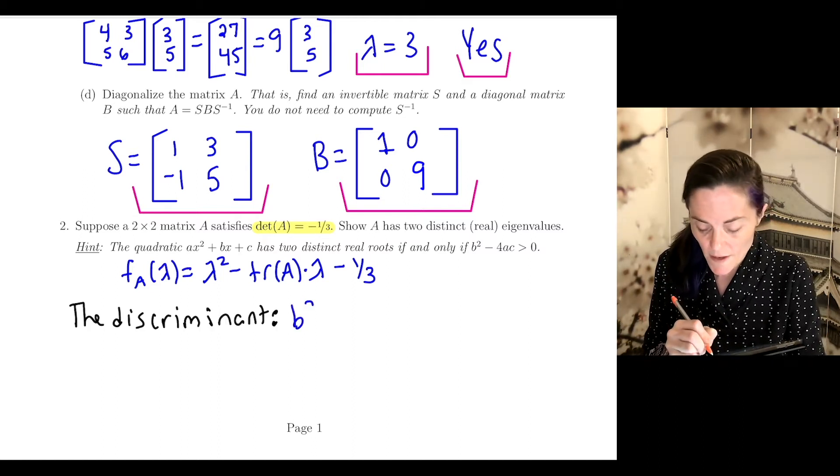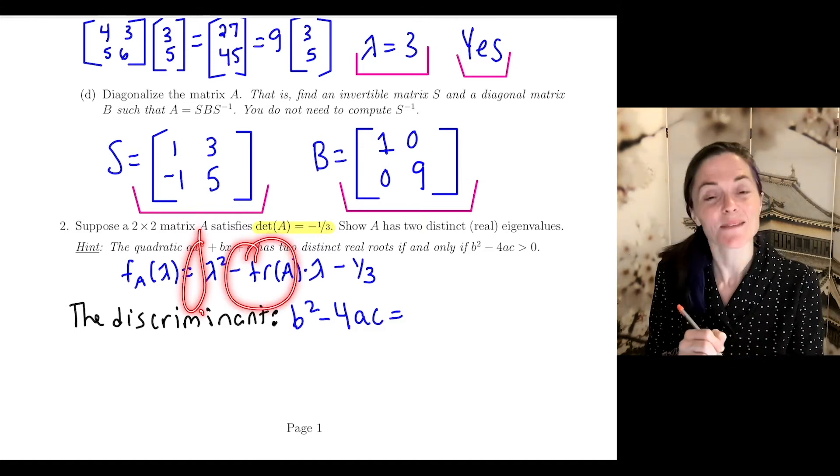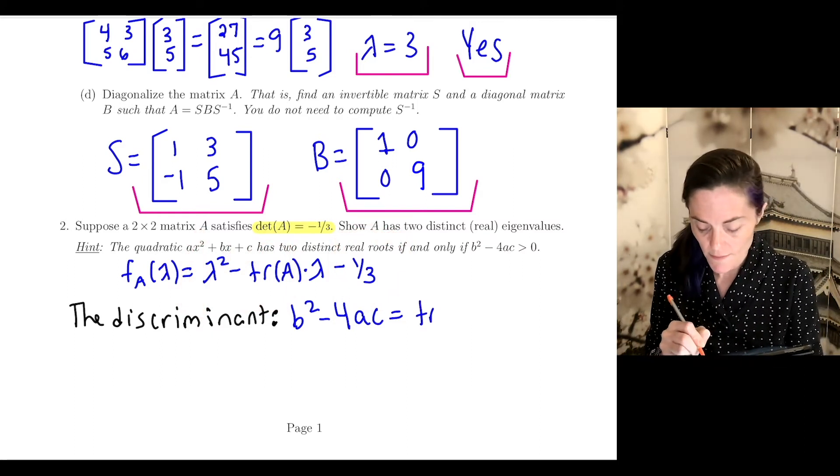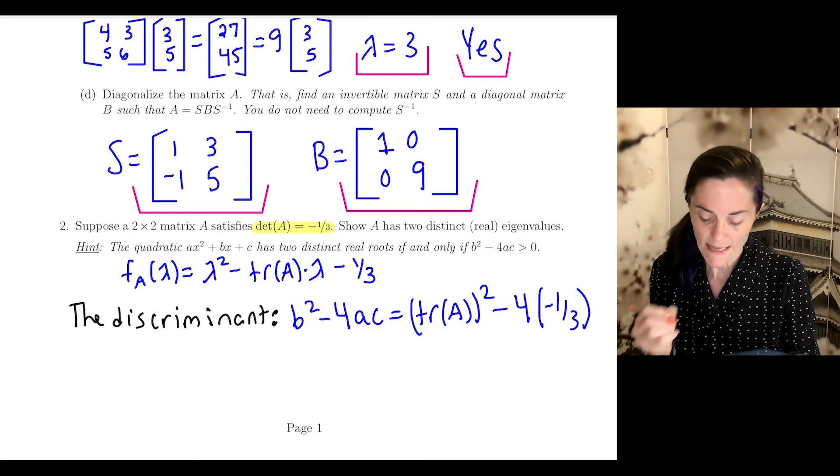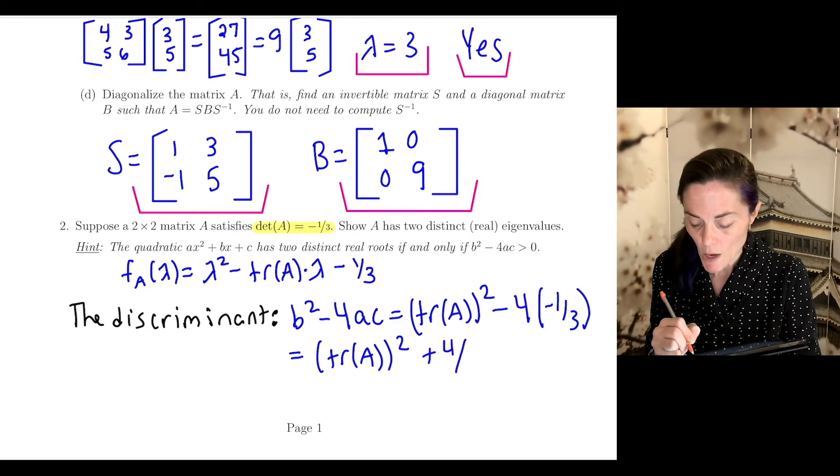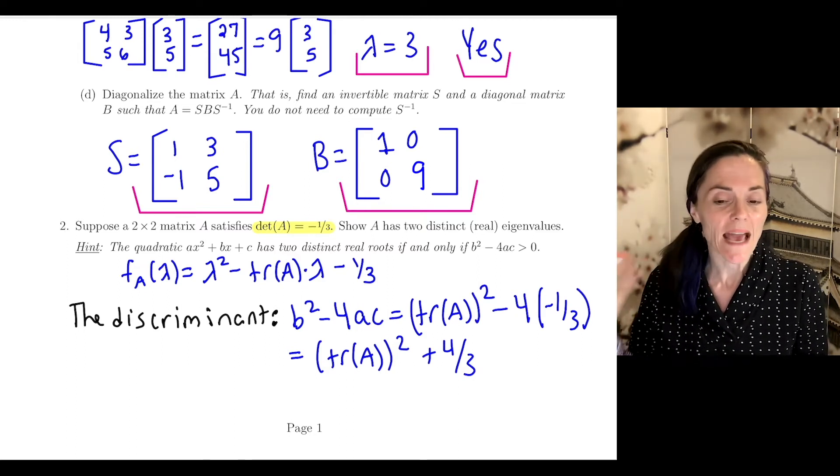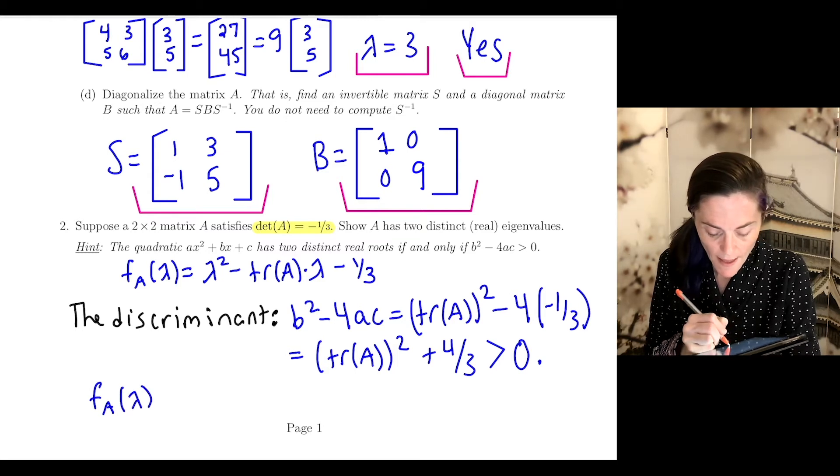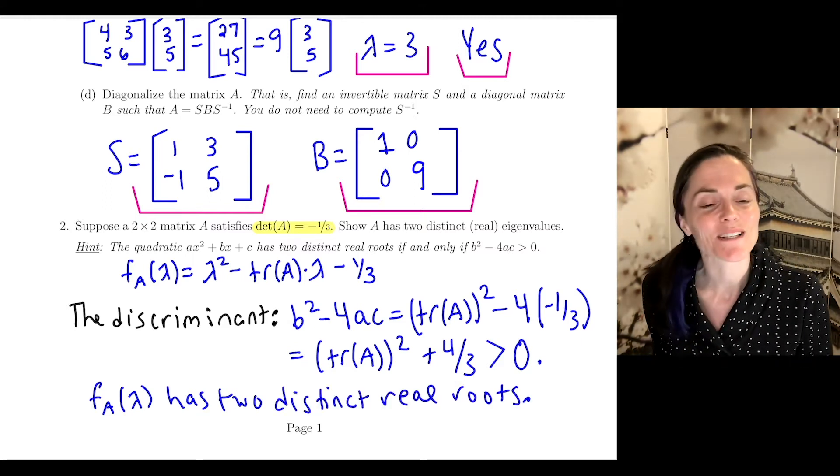The discriminant here is B² - 4AC. A is 1, B is minus the trace of A, C is negative one-third. So we get the trace of A squared minus 4 times negative one-third, which is the trace of A squared plus four-thirds. You see, no matter what the trace of A is, its square is non-negative, and when I add four-thirds, I get strictly positive. And so f_A(λ) has two distinct real roots.